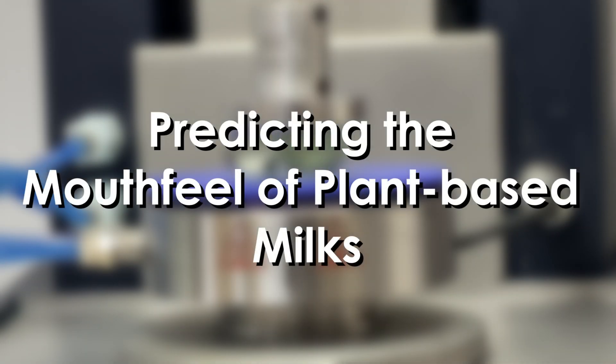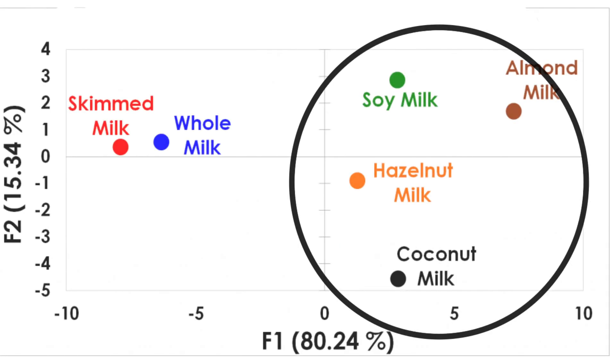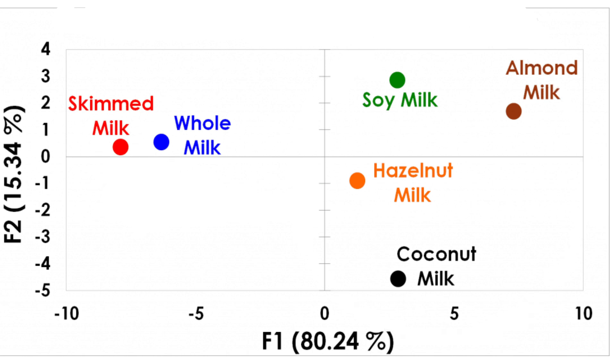Rheology and soft tribology in combination can allow for benchmarking and comparison of behaviors. For example, if you have a plant-based product and a dairy-based product, you may wish to compare how those products benchmark against each other.